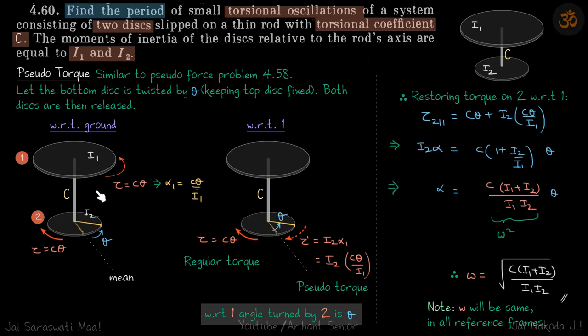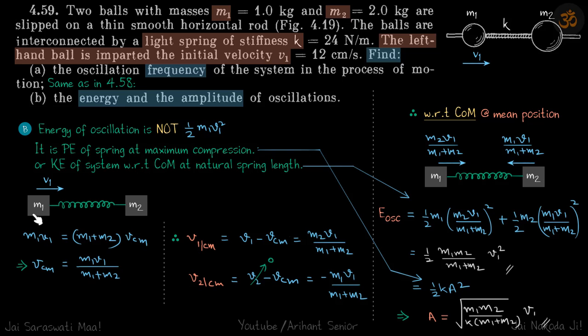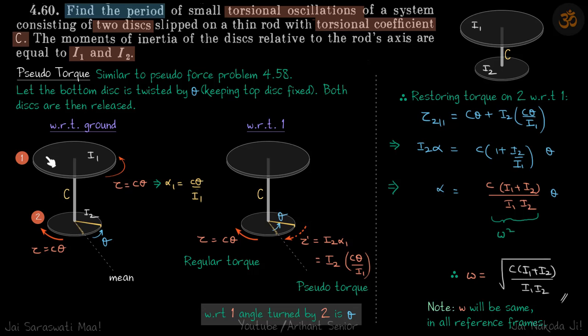You can see net torque on the system is going to be zero. The equivalent in a two-block spring problem is when you just pull both the blocks aside. So keeping one of the blocks fixed, let me show you in the diagram. Let's say we keep this block fixed and stretch it by a distance x, and then release both the masses. Force on both the masses will be kx and net force on the system will be zero. Just like that, we have kept this fixed, turned this by theta, and released. So torque on both will be in opposite direction, so net torque on the system is zero.